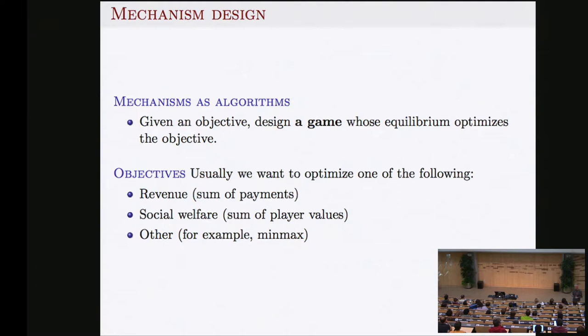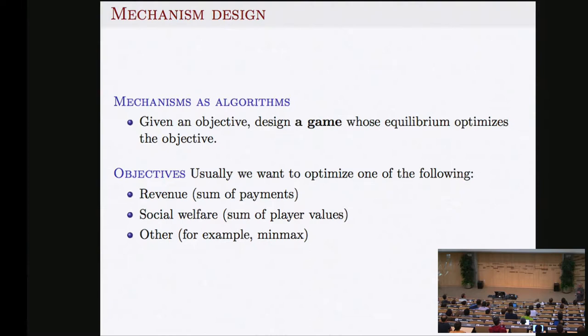Sometimes we introduce incentives so we can optimize something. A company tries to optimize revenue or profit; internet companies often optimize revenue when starting. Anyone else probably wants to optimize social welfare — the happiness of society. I was surprised when I first heard this: I thought economists tried to optimize profit, but companies optimize profit while economists try to optimize the social objective.